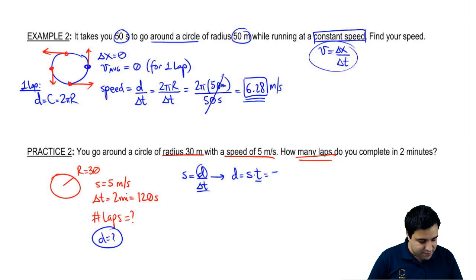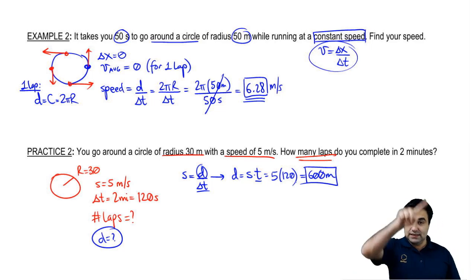Speed is 5. And time is 120. Speed is 5 and time is 120. And this gives you 600 meters. So the total distance that you went around this thing is 600 meters. Here's the idea.